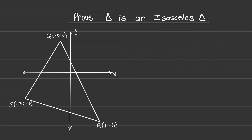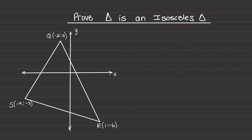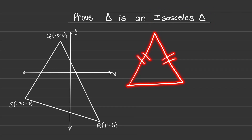In this question, we want to prove an isosceles triangle. The property of an isosceles triangle is that the opposite sides of the triangle are equal in length.